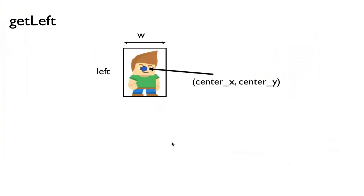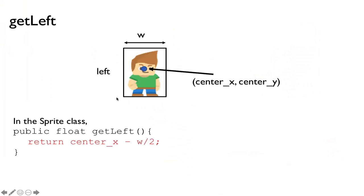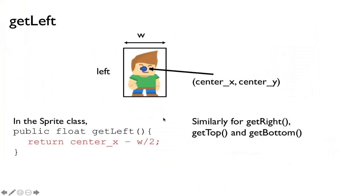So we need to figure out, for example, the getLeft accessor method — what is the left boundary of the image. Well, we have a variable called centerX and another variable called the width W. So we take centerX and subtract half the width. Here's what the method looks like in the sprite class: getLeft returns a float, taking the centerX of the sprite and subtracting width over 2. That gives you the left side. In the same way we can find the right side, the bottom side, and the top side.